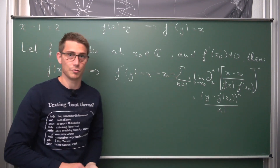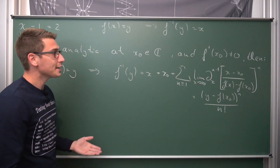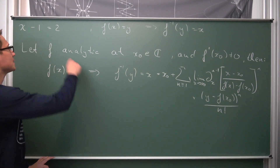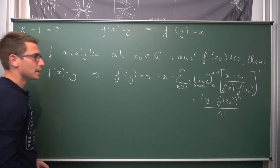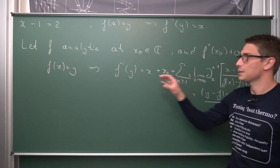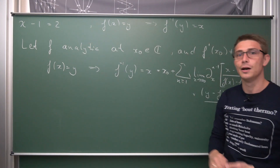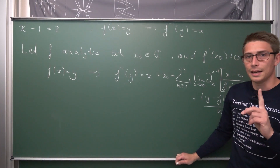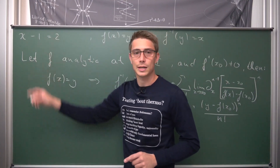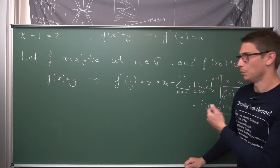This is the Lagrange inversion theorem. It seems rather abstract at first, but it's not too bad. All we have to do is take our problem and turn it into the formalism of the Lagrange inversion theorem, under the condition that all the conditions up here hold. Let us check those conditions and then turn our problem into the Lagrange inversion theorem formalism.